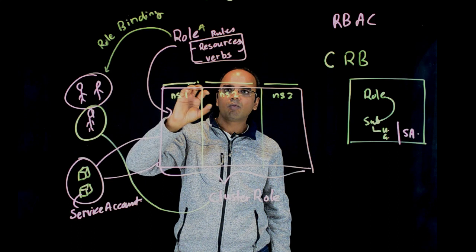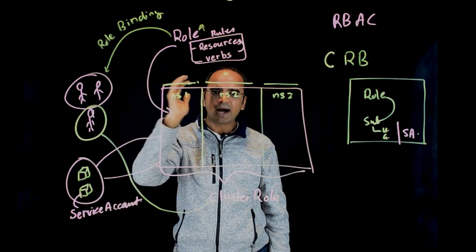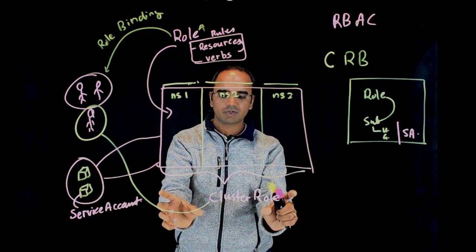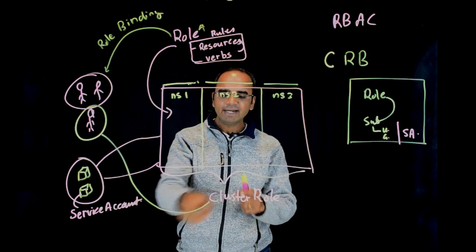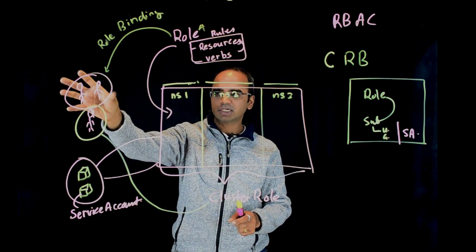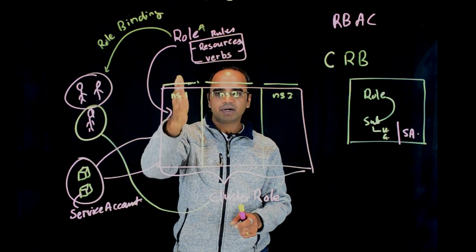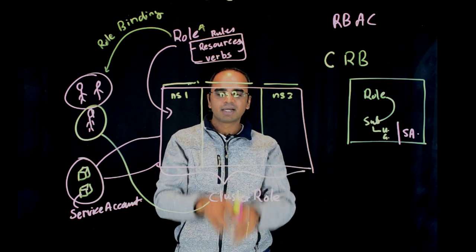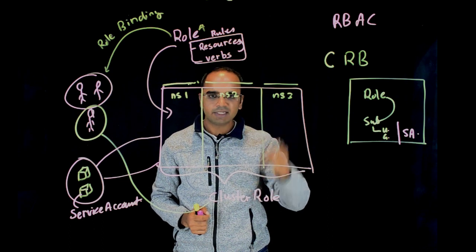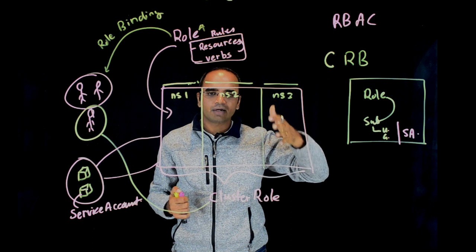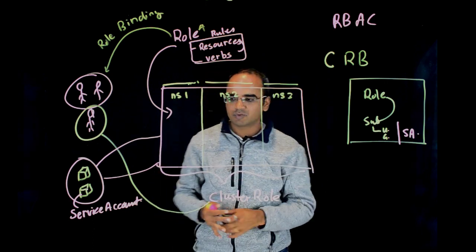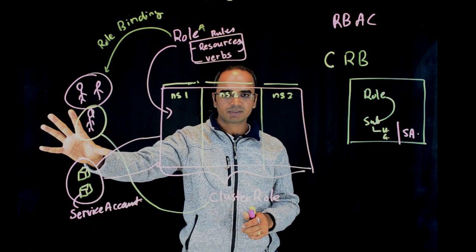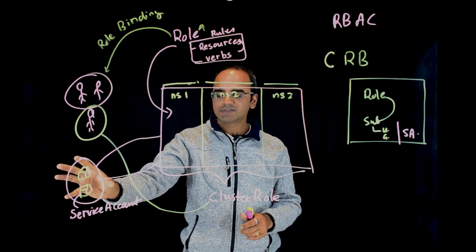The RBAC system works as follows: you authenticate the user using one of the authentication methods, and once authenticated you decide what access the user, group, or service account has by binding them to either a role — which is namespaced — or a cluster role which covers the complete cluster. You can say a user has read-only access to a particular namespace, or that a user is limited to a specific environment or project with full access within it.